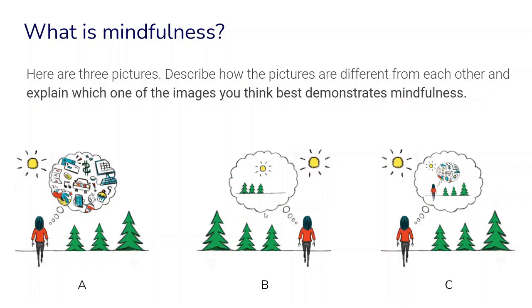An empty mind doesn't really represent our human experience so well, because mostly we have a lot of different things going on in our mind that have nothing to do with the here and now. The third image shows the woman being aware of all the different things going on around her but also inside of her. This image may be the best representation of mindfulness — being aware of what's going on around us but also inside of us.